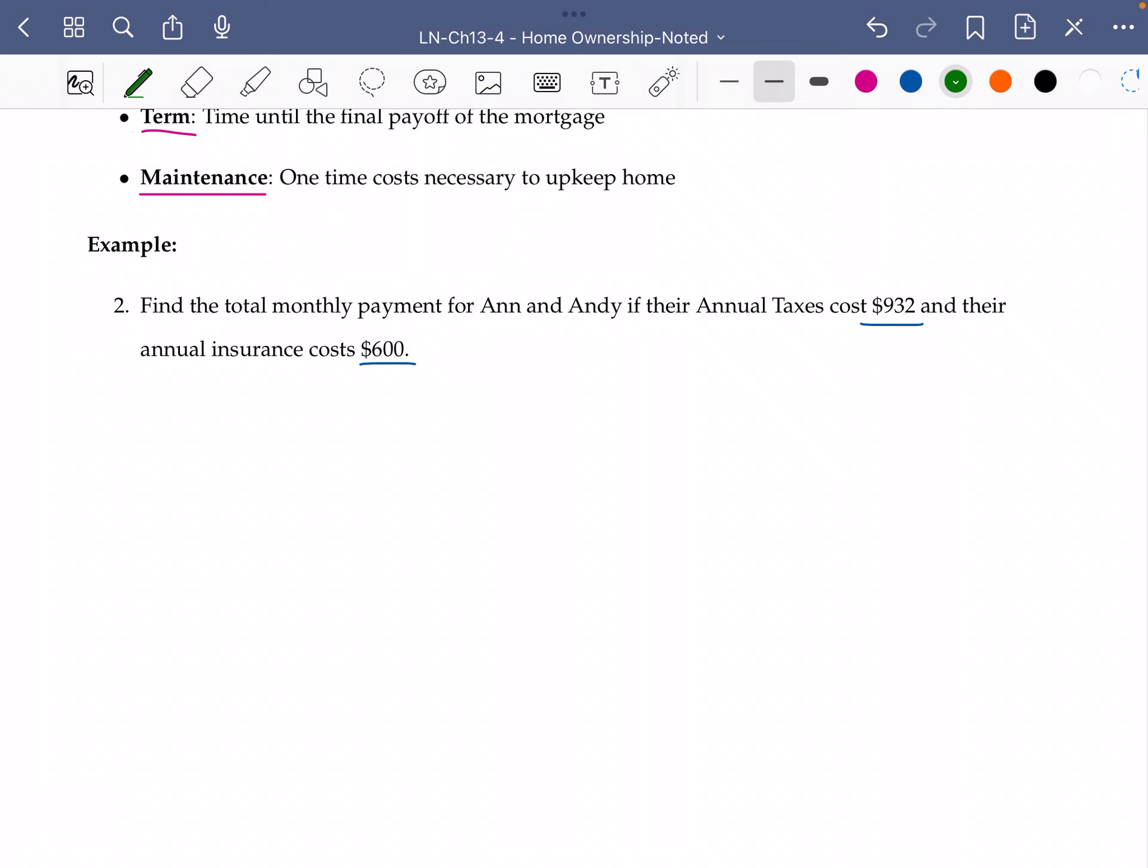All right, so if this is how much we are paying in taxes each year, then our monthly taxes are going to be $932 divided by 12. 932 divided by 12 gives us $77.67.